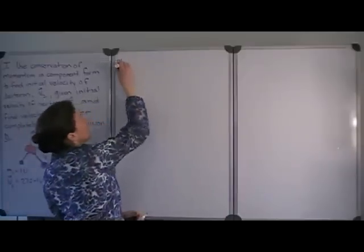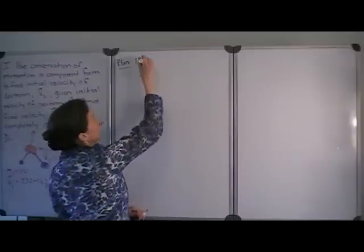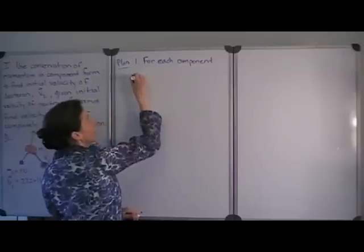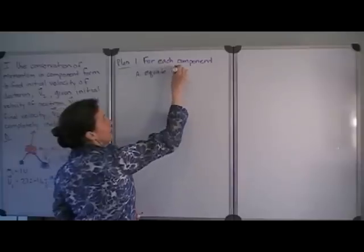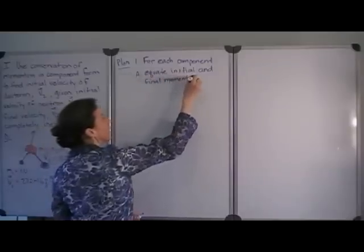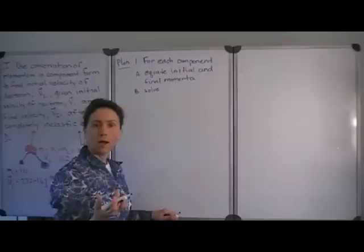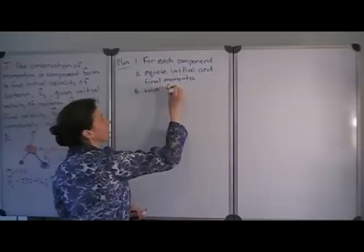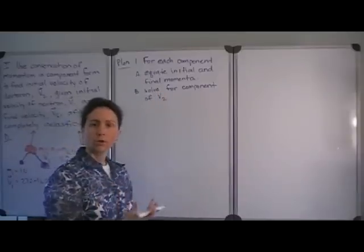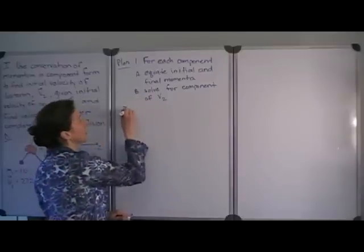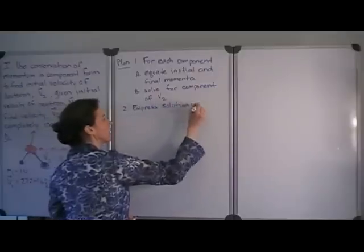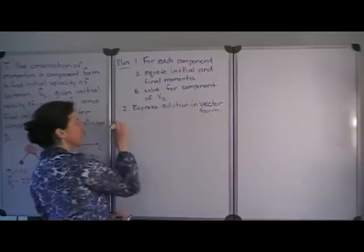Let's make a plan for how we will solve this problem. Because we're considering each component individually, for each component we're going to equate the initial and final momenta and then solve for the initial component of the velocity of the deuteron. After doing this for each component direction, we'll express our answer back in vector form.